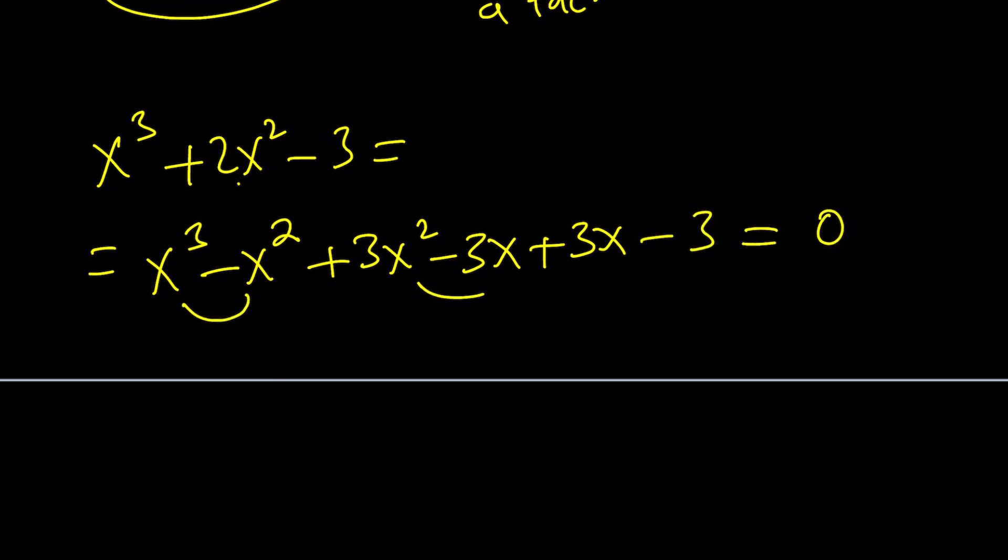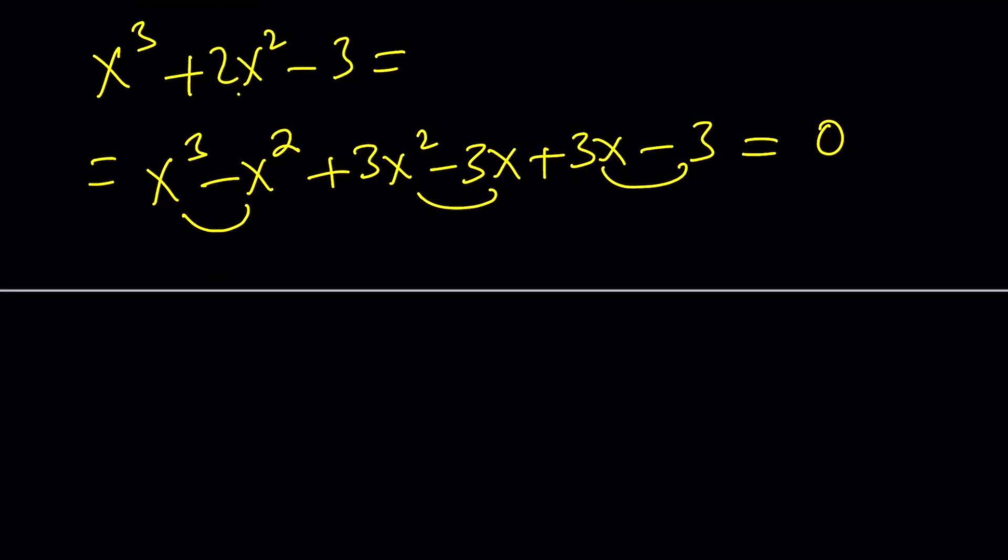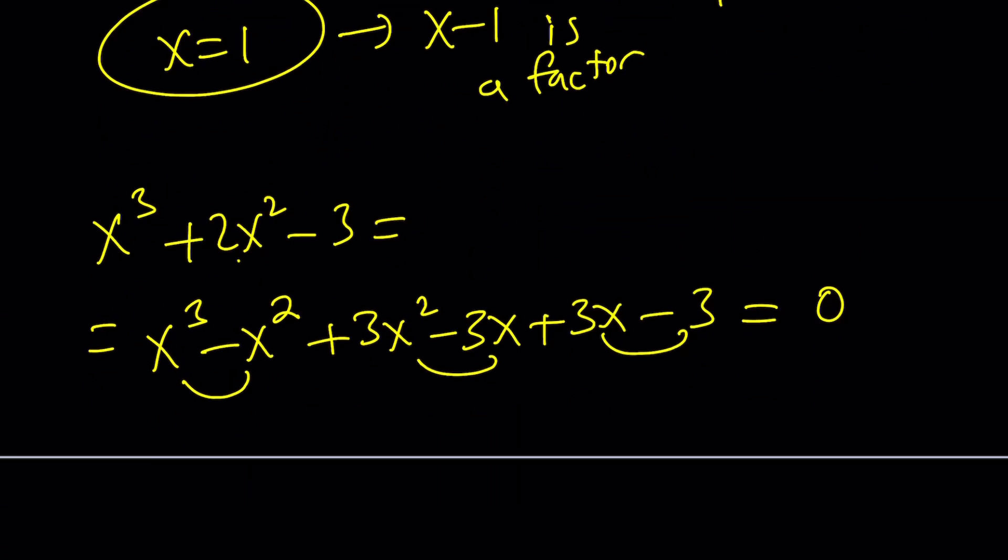And that's equal to 0. Now, I can factor by grouping. Notice that this breakdown is different from the first method and the, I think, second, right? This is the third. So that would be different from first and second.